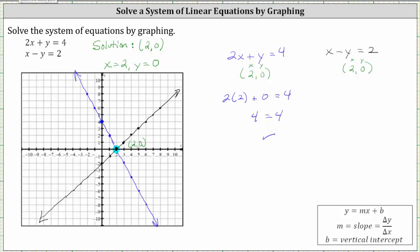Verifying the ordered pair does satisfy the first equation. And now for the second equation, substituting 2 for x and 0 for y gives us 2 - 0 = 2, which is true. And therefore, the ordered pair does satisfy the second equation, which verifies our solution is correct. x = 2, y = 0, we have one solution. I hope you found this helpful.